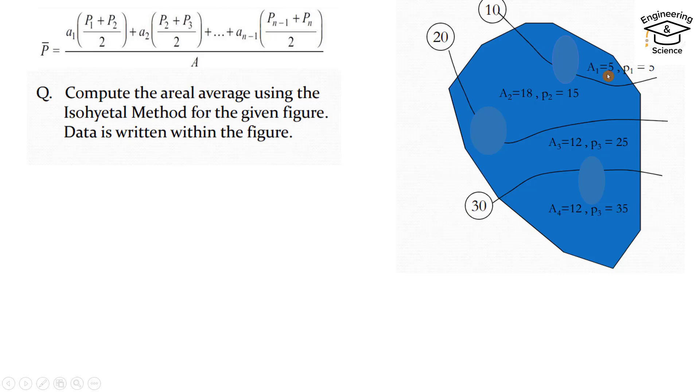Let's calculate. First, isohyetal range: the first one is 10 maximum and here 0, so the range is 0 to 10. For these two isohyetals, the range is between 10 to 20, and this one 20 to 30, this one 30 to 40.